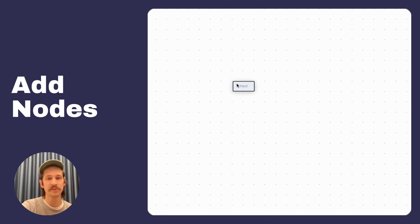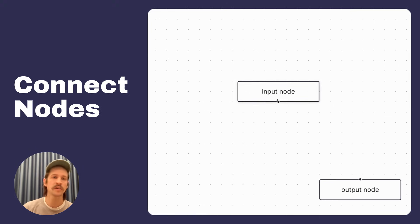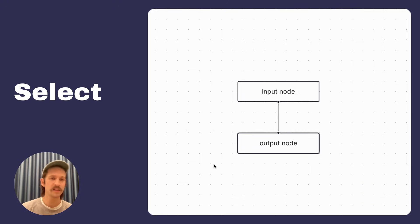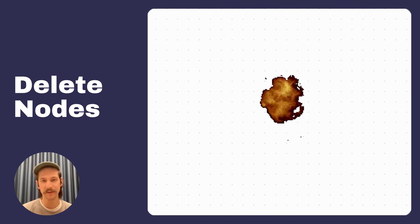All of your nodes come on an infinitely zoomable and pannable canvas where you can create new nodes, connect those nodes with an edge, drag nodes around, select your nodes, and then delete them.